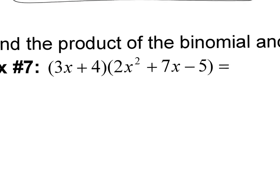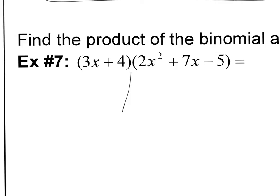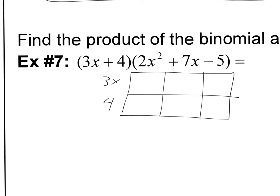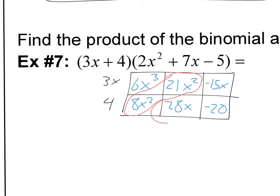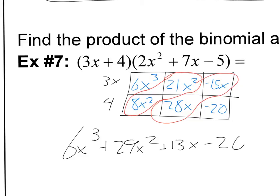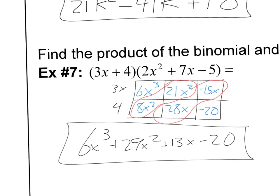The box method is so easy that even when we get to trinomials, it's just as simple — we just make a bigger box. I'm going to put 3X here, 4 here, and put lines in between all my terms. 3X times 2X squared makes 6X cubed. 3 times 7 is 21 and X times X is X squared, giving 21X squared. Negative 5 times 3 is negative 15X. 4 times 2 is 8X squared. 4 times 7 is 28X. And 4 times negative 5 is negative 20. Adding the like terms: 6X cubed, 21 and 8 makes 29X squared, 28 minus 15 makes 13X, and then minus 20.